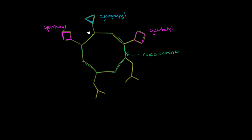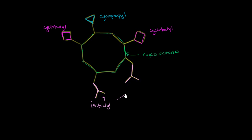Now we can jump over to these two groups right over here. We see that these are clearly the same groups. Let's count the number of carbons: one, two, three, four carbons. So we'd think about the prefix 'bute,' but this isn't in a cycle and it's not in a straight chain — it has this Y shape. The common name for this Y shape is an isobutyl group. And this one is an isobutyl group as well, so these are both isobutyl groups.